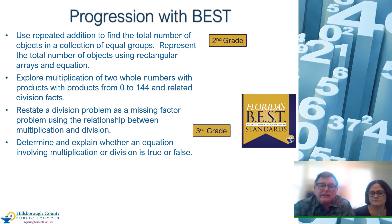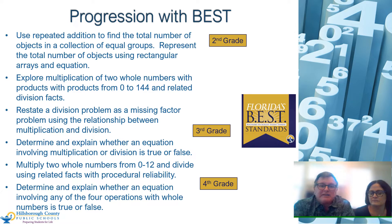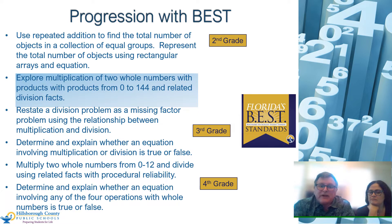In grade four, notice that the word procedural reliability comes into play, because students should have a reliable strategy that they can use to multiply basic facts. Also notice — and I encourage you to go back and look at the math to BEST video — one of the changes is we're moving from factors of 10 times 10 all the way to factors of 12 times 12, both with multiplication and division.